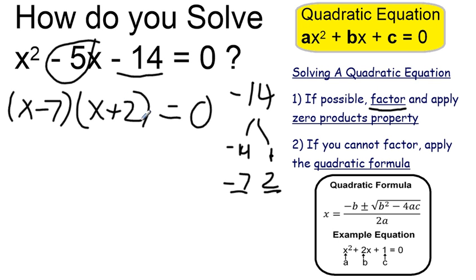Those two factors multiplied together are equivalent to the original. By the zero product property, that means either x-7 equals 0, or x+2 equals 0.